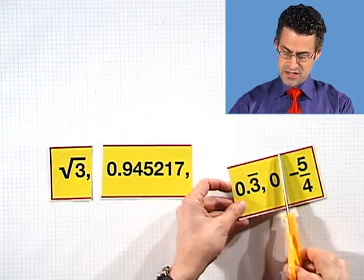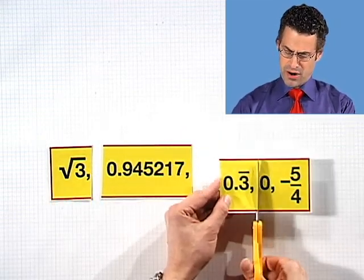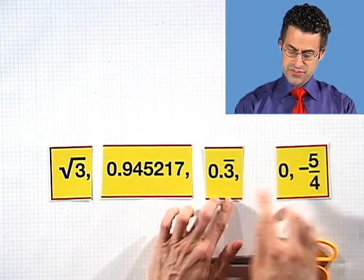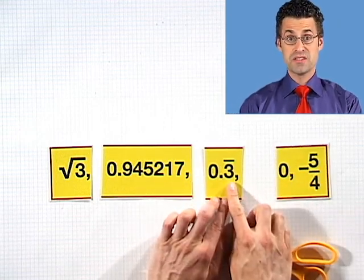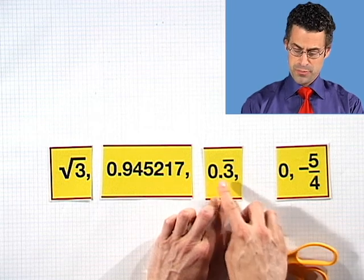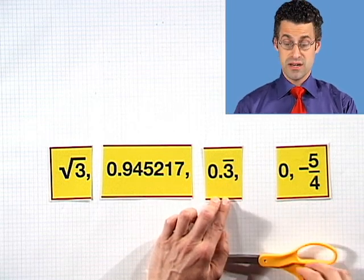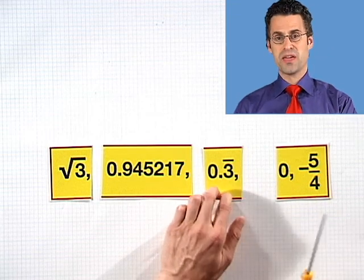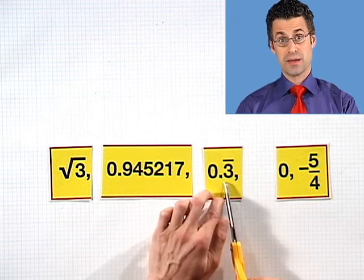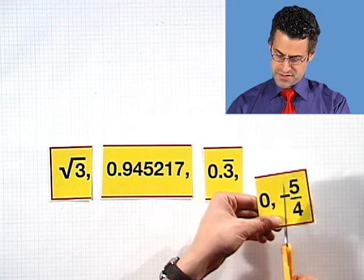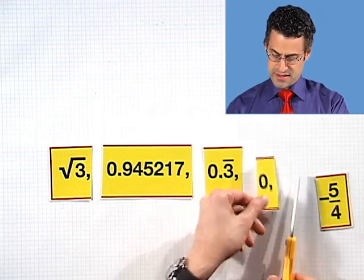Then I've got this one 0.3 with a bar. And what that means is that that 3 digit repeats forever. This is a repeating decimal 0.333333 forever. Never ending. Looks like a long thing but it's just around 0.3 something. Then of course there's the famous 0. You all know what that is. I'm not going to say anything about that.